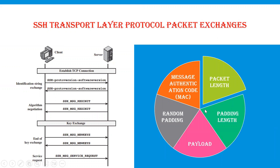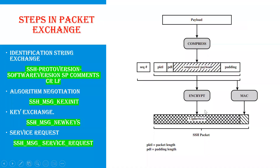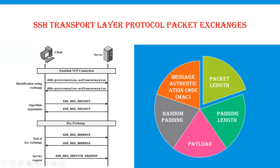You can see the packet exchange parameters: message authentication code, packet length, padding length, payload, random padding, and message authentication code. Here you can see a client and a server first establishing a TCP connection, and there are some steps followed such that data is transferred from the client to the server. First, taking packet length — it is the length of the packet in terms of bytes. Padding length is the length of the padding fields, which are the zeros attached in front or at the back of the packet.